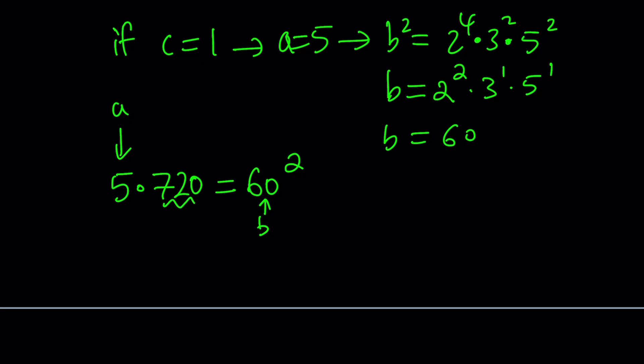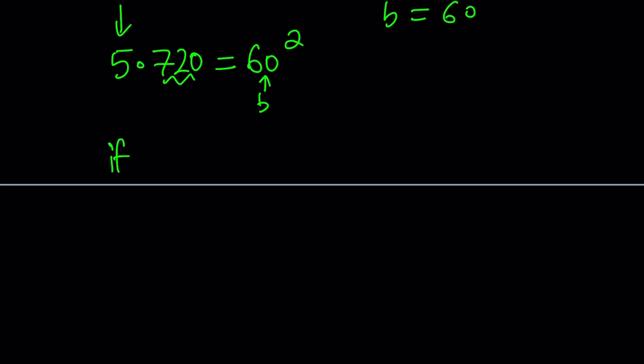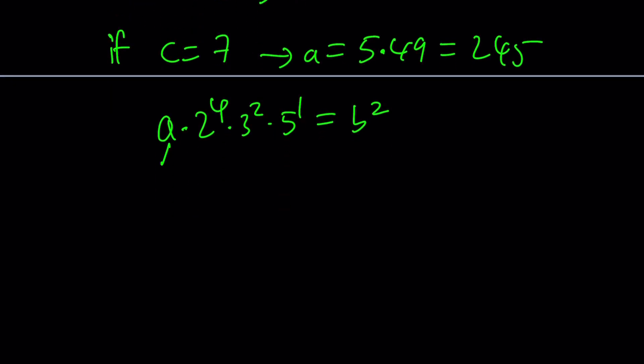Now let's go ahead and take a look at another value. What if C is equal to 7? Then you're going to get a equals 5 times 49, remember that's C squared, and that's going to be 245. And if you plug it in, a times 2 to the 4th times 3 to the 2nd times 5 to the 1st equals b squared. If a is 245, in other words 5 times 7 squared, then you're going to get 2 to the 4th, 3 to the 2nd, then 5 to the 2nd, but also 7 to the 2nd. So b from here is going to be 2 squared times 3 times 5 times 7. That's going to be 420.